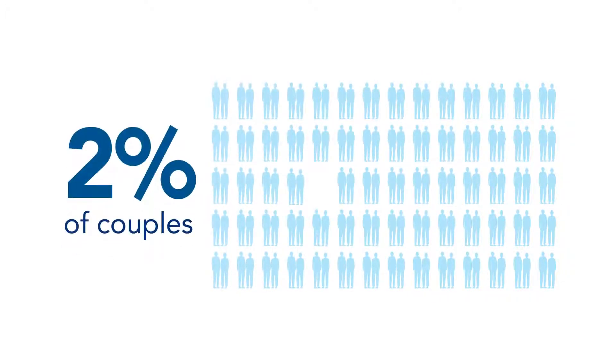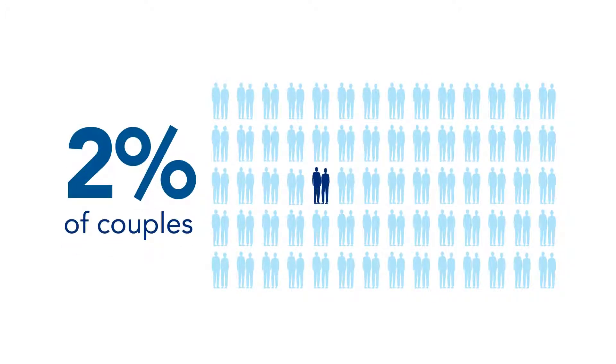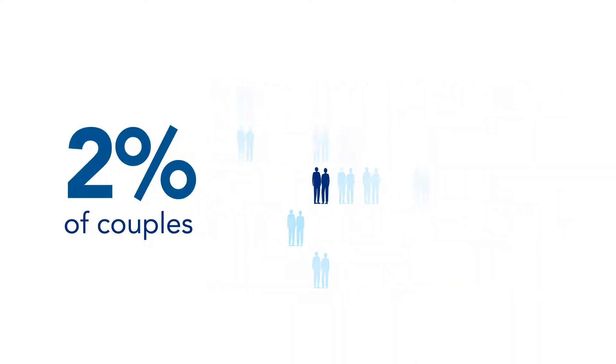About 2% of couples have an increased chance of having a child with a genetic condition. Most of these people do not have a family history of the condition.